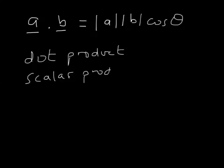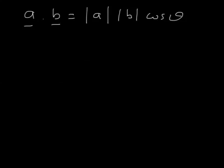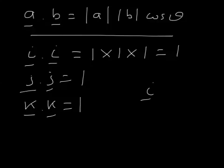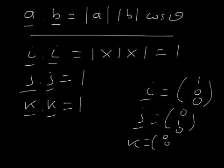So this is the definition of the dot product, and what we'll see in the remaining part of this video is why this is actually quite a useful way of defining vector multiplication. So let's look at the unit vectors: i dot i. The magnitude of the unit vector i is 1, and the cosine of the angle between a vector and itself is cosine of 0, which is 1. So i dot i is 1, and in the same way j dot j is 1 and k dot k is 1. Remember, i is the vector (1, 0, 0), j is the vector (0, 1, 0), and k is the vector (0, 0, 1) — that's in three dimensions. In two dimensions, we've only got the first two components.